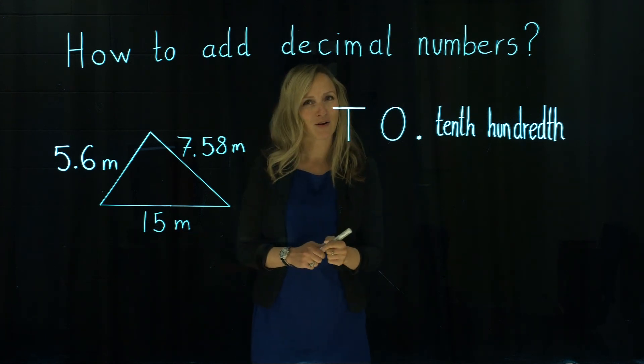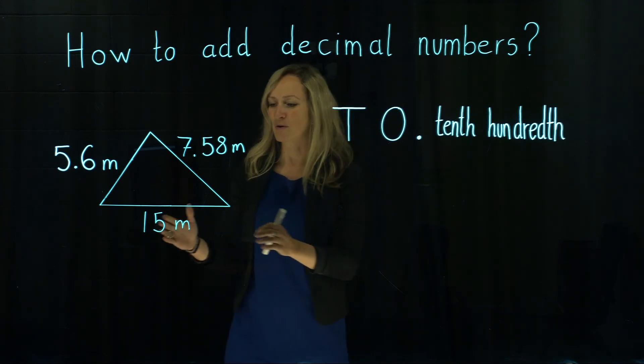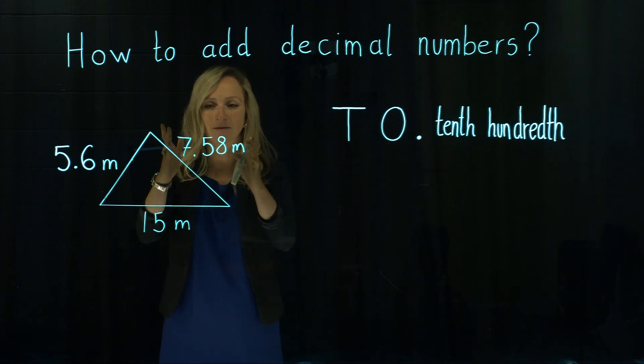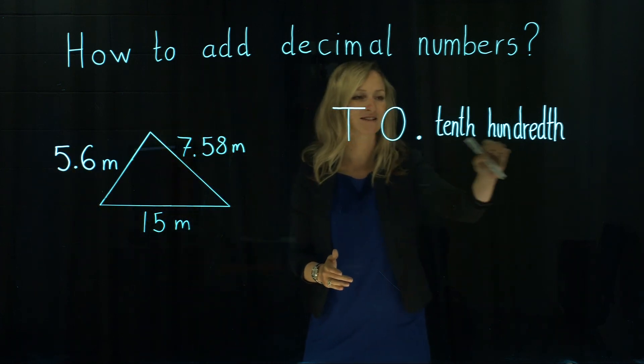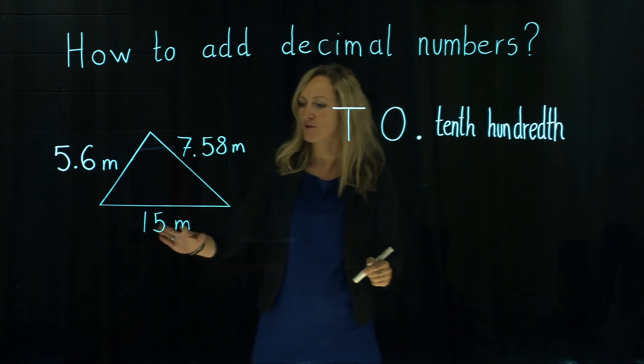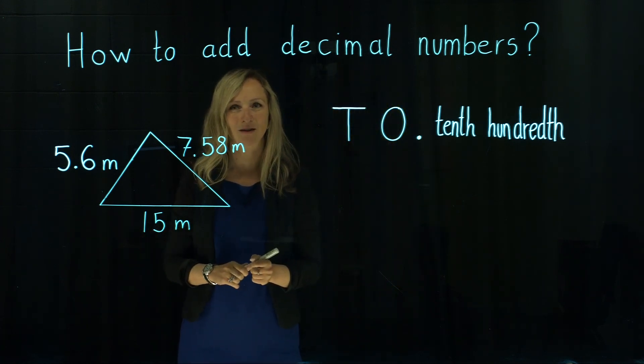How are we going to add those numbers? We are going to place them in a place value table. So 15 meters, what does that mean?